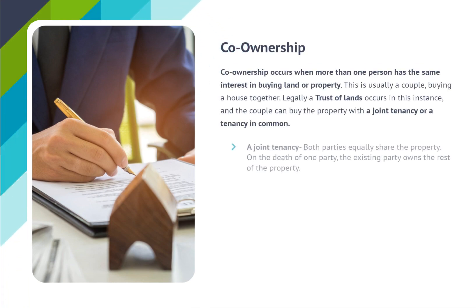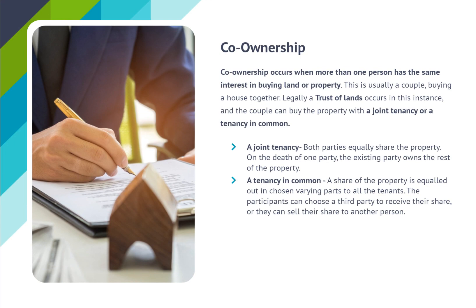Co-ownership occurs when more than one person has the same interest in buying land or property — this is usually a couple buying a house together. Legally, a trust of lands occurs in this instance, and the couple can buy the property with a joint tenancy or a tenancy in common. A joint tenancy means both parties equally share the property; on the death of one party, the surviving party owns the rest of the property. A tenancy in common means a share of the property is divided in chosen varying parts to all the tenants, and participants can choose a third party to receive their share or sell their share to another person.